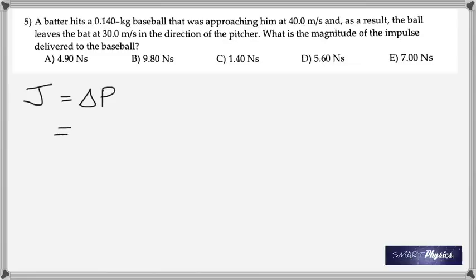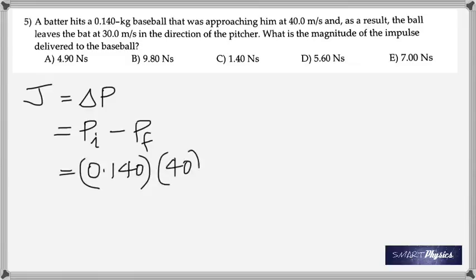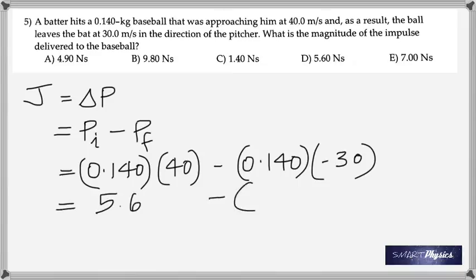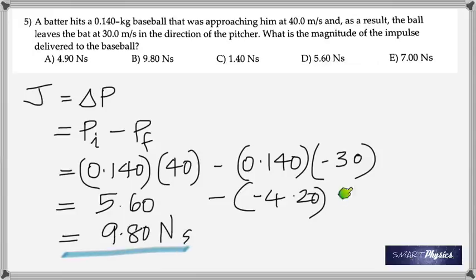Here the baseball is hit back because it says in the direction of the pitcher, so it's hit back. Impulse is change in momentum. Here I've taken the initial direction as positive and the final is negative - that's why you see a minus there. That's an important point that you've got to remember. Therefore the total impulse is 9.80 Newton seconds.